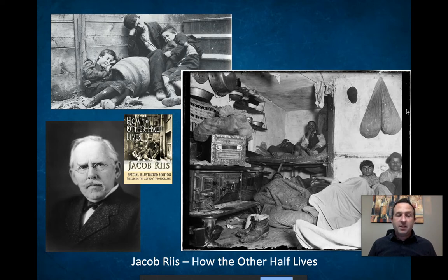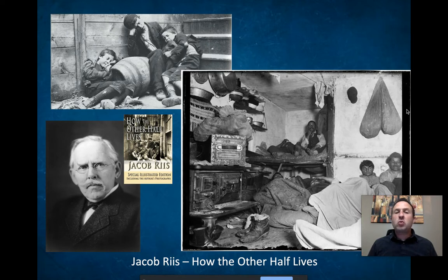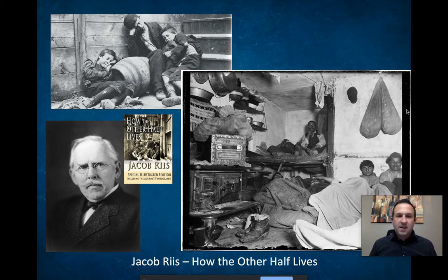He published a book called 'How the Other Half Lives' — you can see the picture of the book right there. In this book he published his photos along with the written word to describe the squalor, the disease, the poverty. It detailed the high infant mortality rate, the disease rate, and other issues that produce a low quality of life — like lack of sanitation and lack of heating.